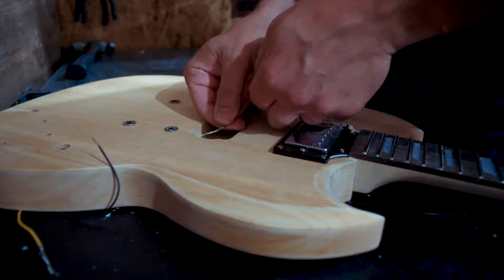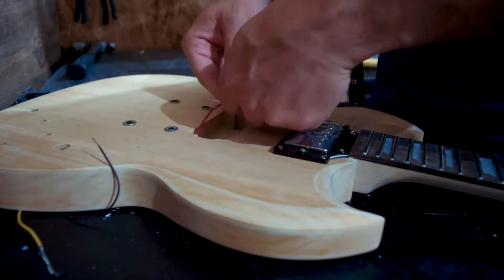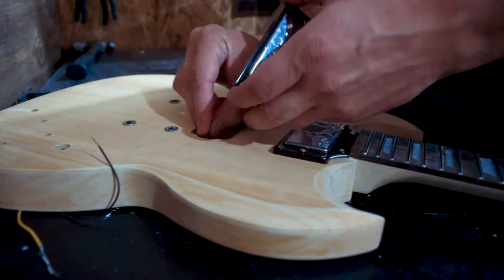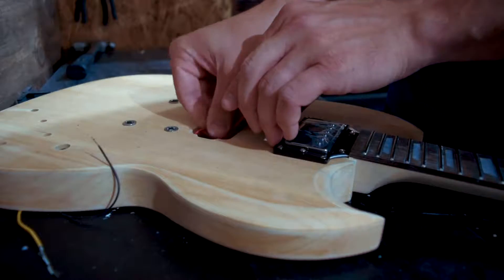I follow that by doing the same with the bridge pickup. Now sometimes you will have to twist the wires together to get them through the holes, but that's pretty easy to untwist them on the other side. That just makes it easier to push them through.